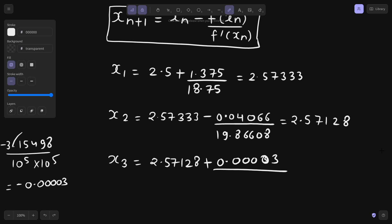Divided by 3 x squared. So 3 into what was x? It was 2.57128 square. So this is giving us 19.83444.